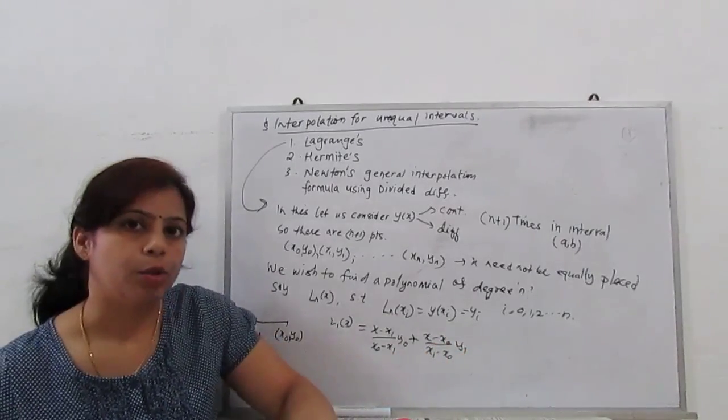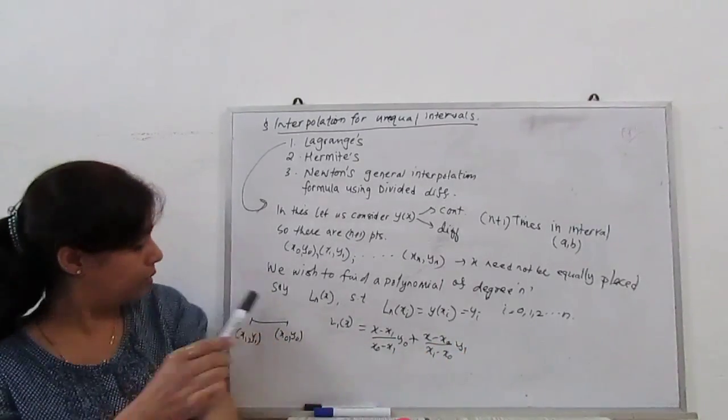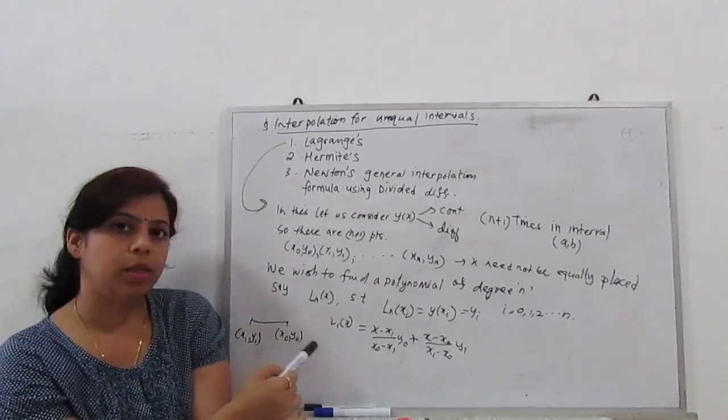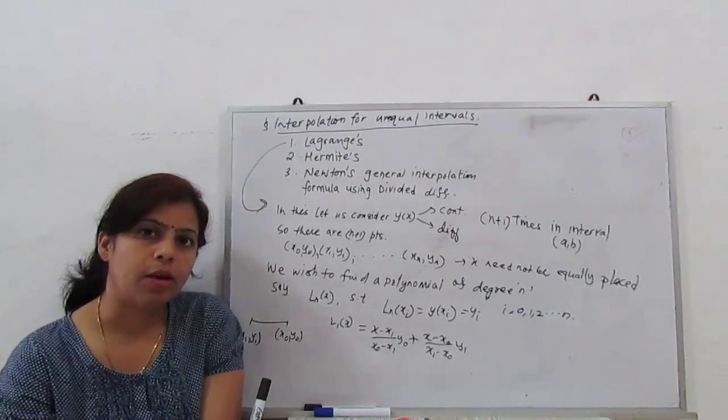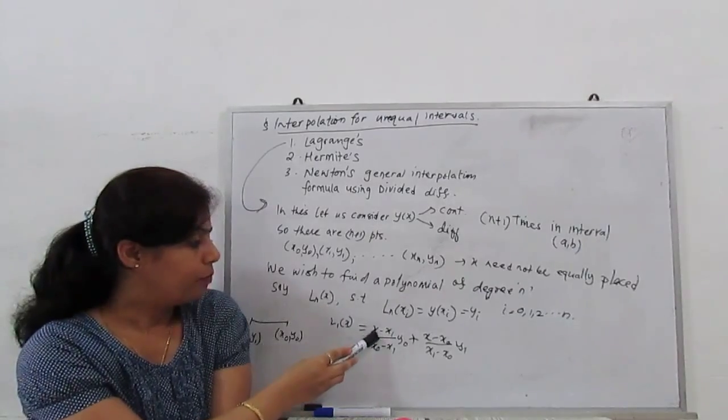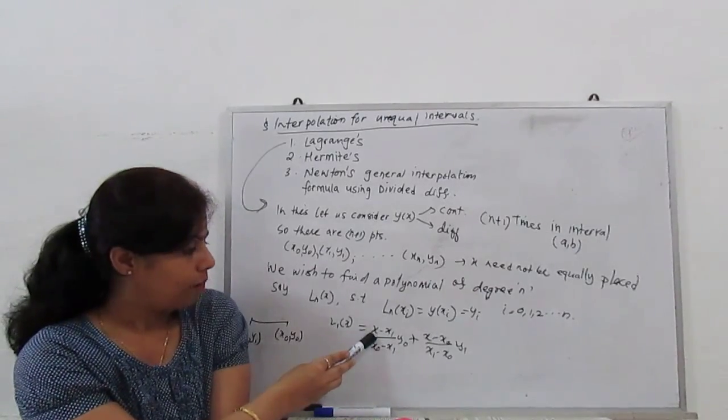This is the very basic equation with two points. x is the point where we have to find, this is the polynomial of first degree in terms of x.